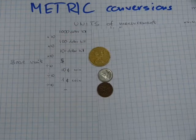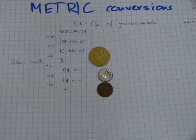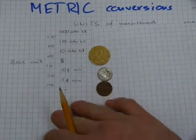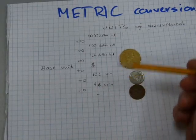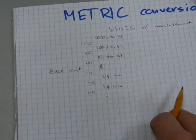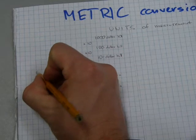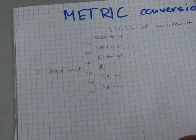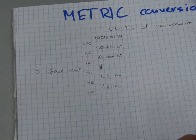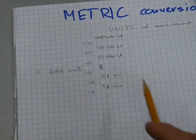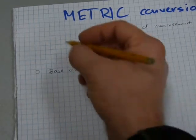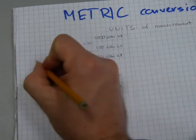Likewise, we have one tenth of the base unit — a ten cent coin — and one hundredth of the base unit is a penny, one cent. I'm going to use an elevator analogy where base unit amounts are different levels in a building. The level where the base unit sits is ground level, and I'll write zero there for the base unit.